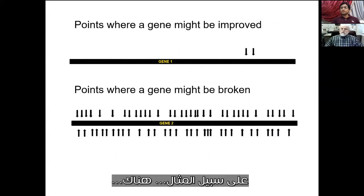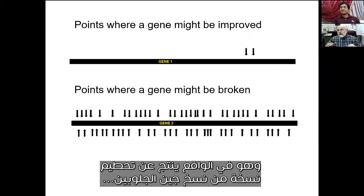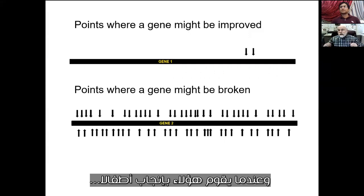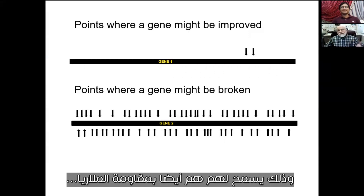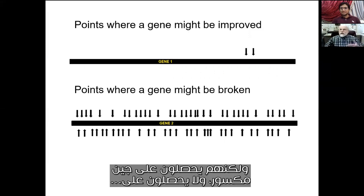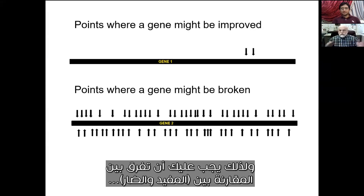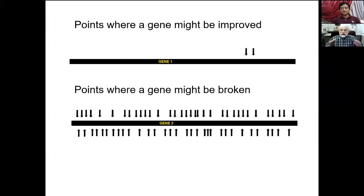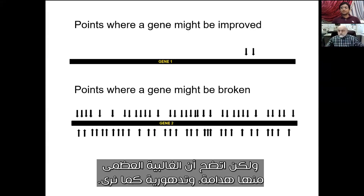It does give the new traits to subsequent generations. There's a disease called thalassemia, which results from breaking one copy of a globin gene for hemoglobin. It turns out that gives the person resistance to malaria, and when they have children of their own, the children inherit the broken gene, which allows them to be resistant to malaria too — but they're getting a broken gene. They're not getting anything constructive. So you have to separate helpful versus deleterious — that's different from constructive versus destructive. Helpful mutations can be either constructive or destructive, but overwhelmingly they are degradative.